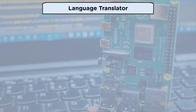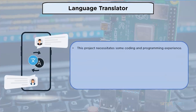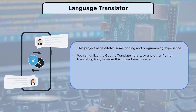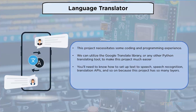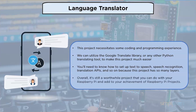Language translator: this project requires some coding and programming experience. We can utilize the Google Translate Library or any other Python translating tool to make it easier. You will need to know how to set up text-to-speech, speech recognition, and translation APIs, as this project has many layers. Overall, it's a worthwhile project to add to your Raspberry Pi achievements.